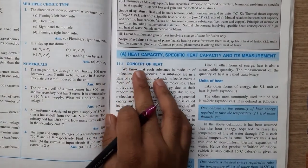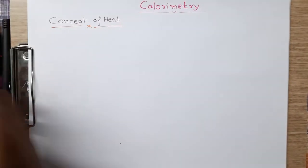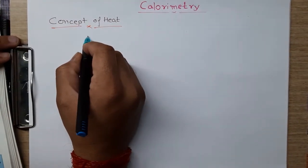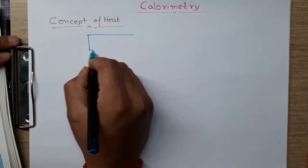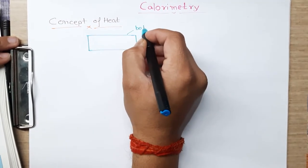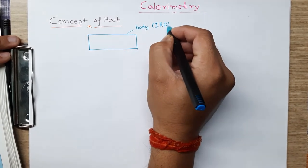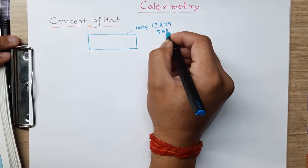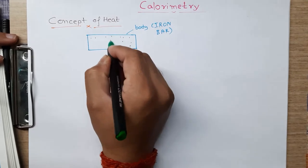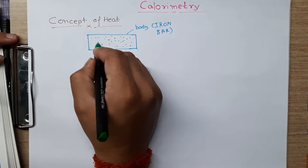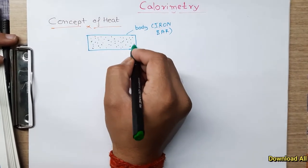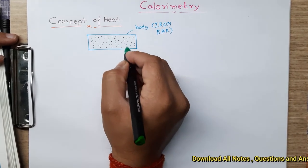The very first topic is concept of heat. So friends, we know that each and every body or substance — suppose this is a body, let us say an iron bar — this body consists of so many molecules. There are so many molecules present in this iron bar or any substance. So any substance is made up of so many molecules.